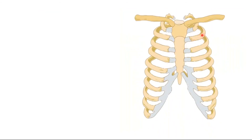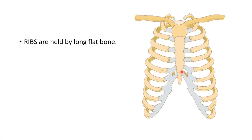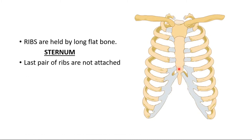Our ribs are joined in front with the help of a flat bone. All the ribs are held together by this flat bone, and it is called the sternum. The last pair of ribs are not attached — you can see the last pair of ribs are not attached. They are called floating ribs.